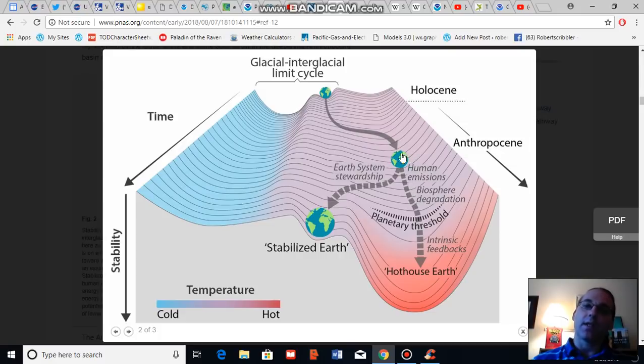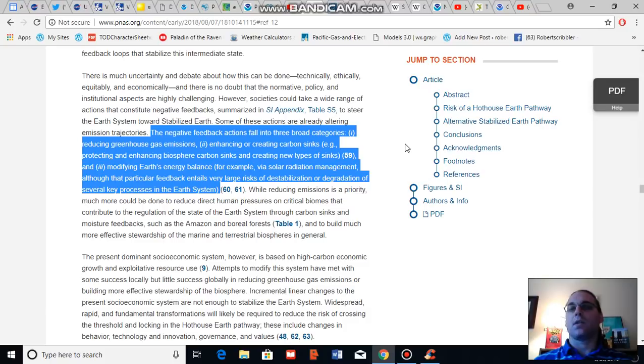Now the avoidance of such hothouse states has been identified by this paper as an earth stewardship pathway. And the paper notes that in order to achieve an earth stewardship pathway, the human system has to move from a carbon-emitting system and a system that produces a forcing for human-caused climate change to a system that produces a negative feedback to warming in the climate system.